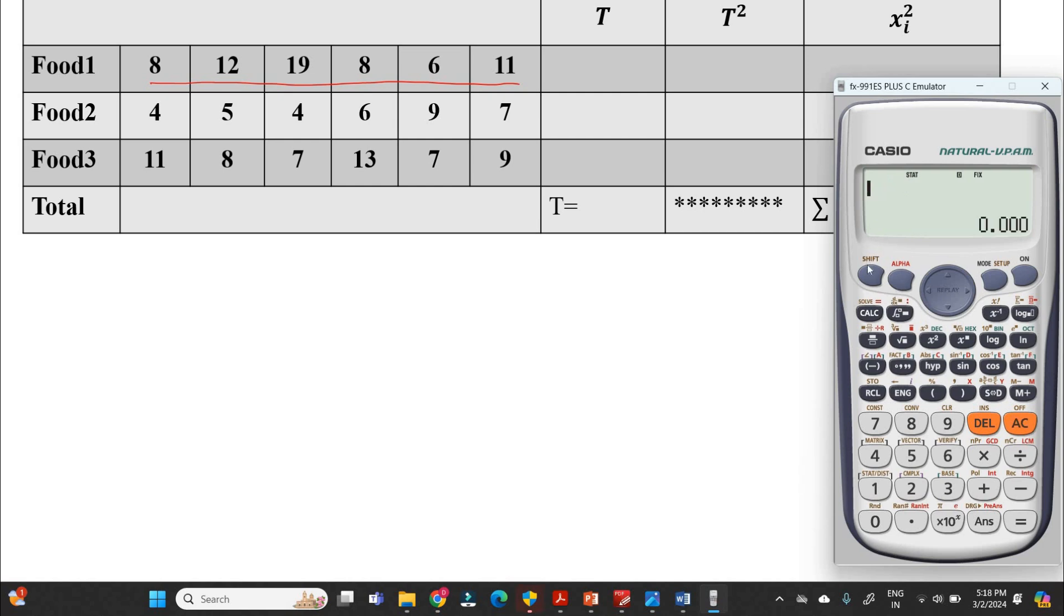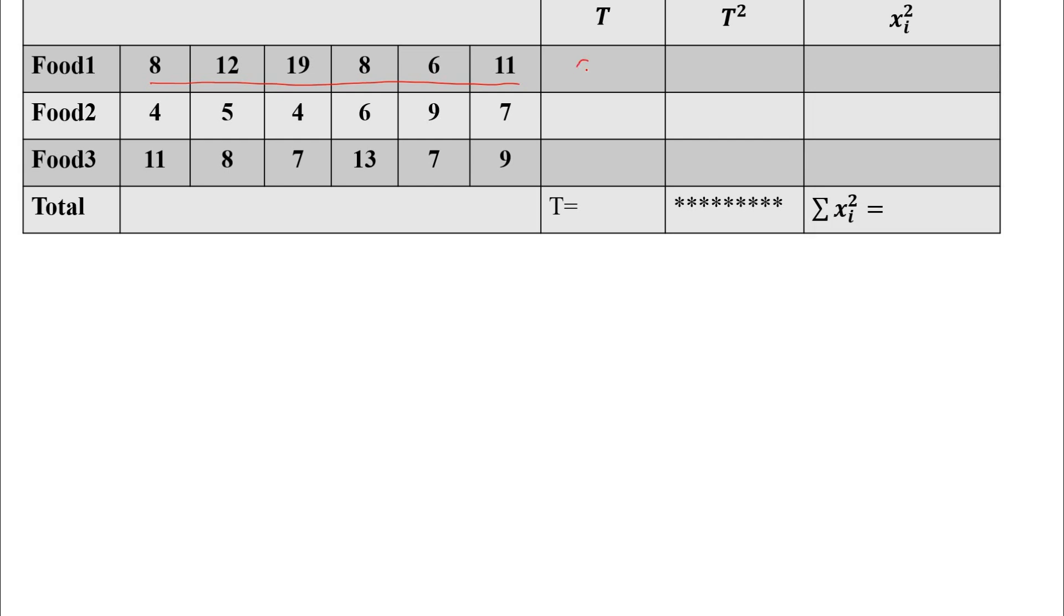Then press AC, then press AC. Go for shift 1, in that consider sum, that is option 3. In that consider summation x, that is 2. You are going to get the value of summation of that whole row, that is 64. You can note down that value as 64.